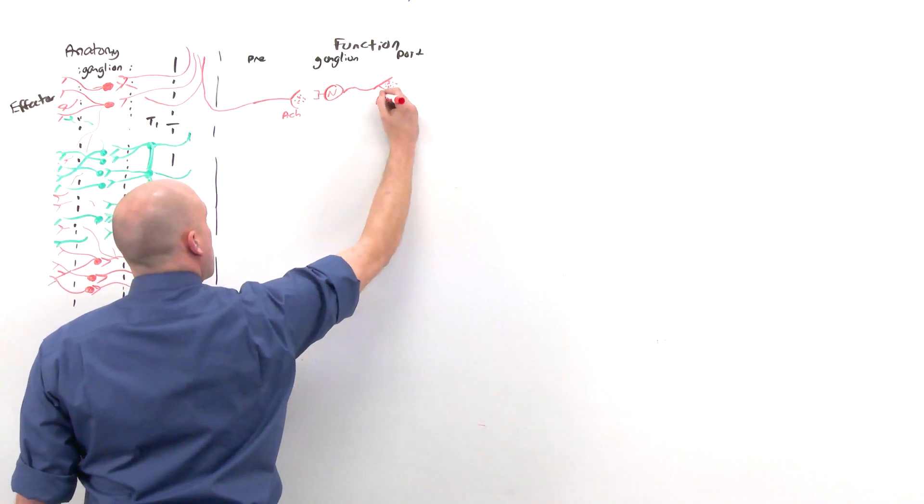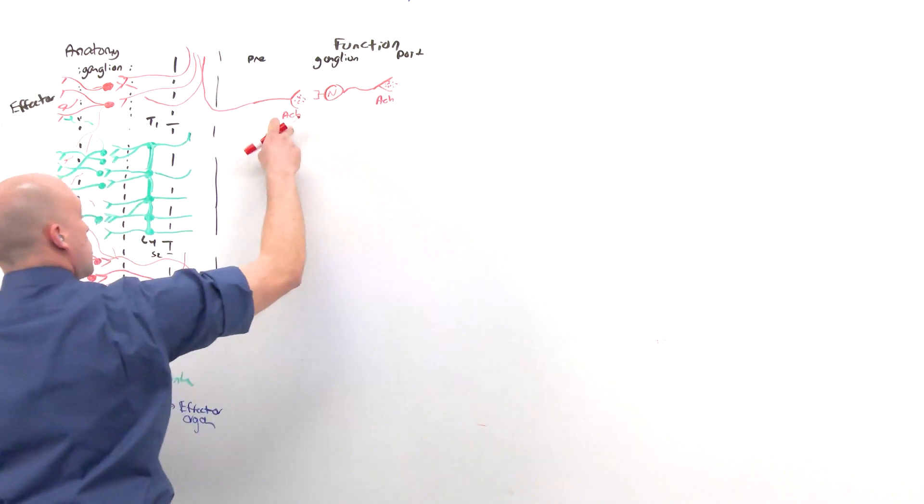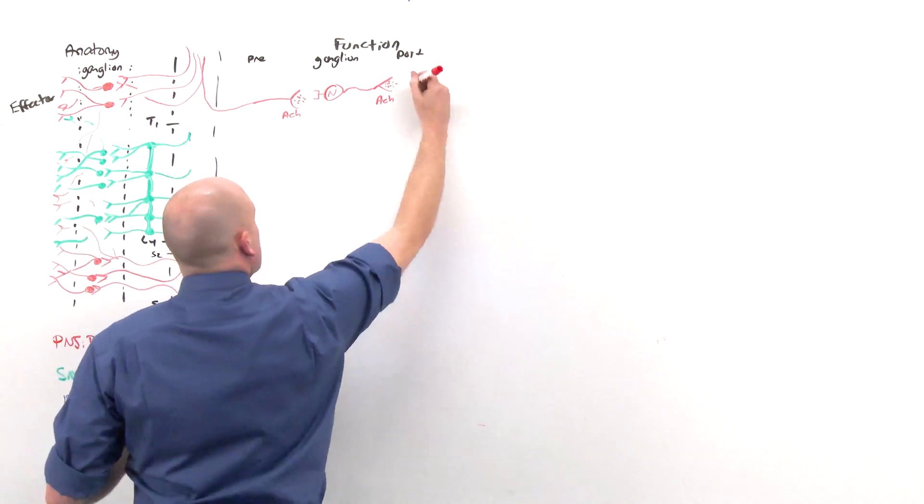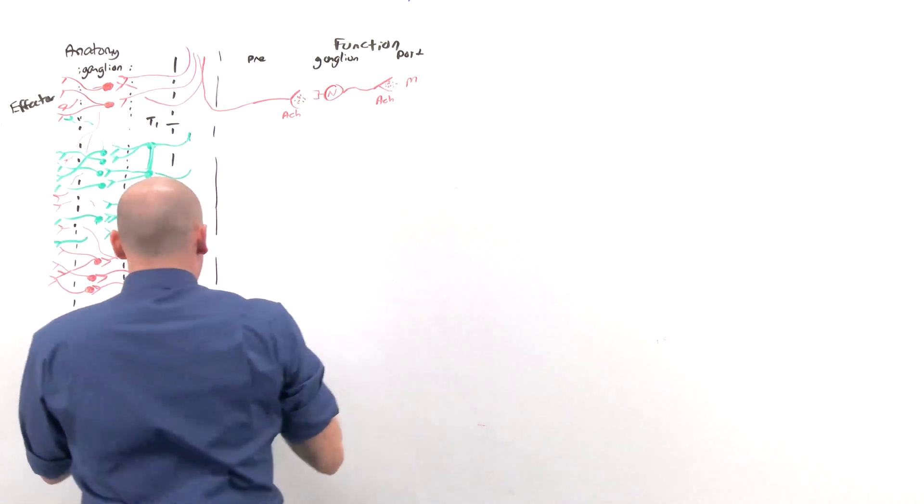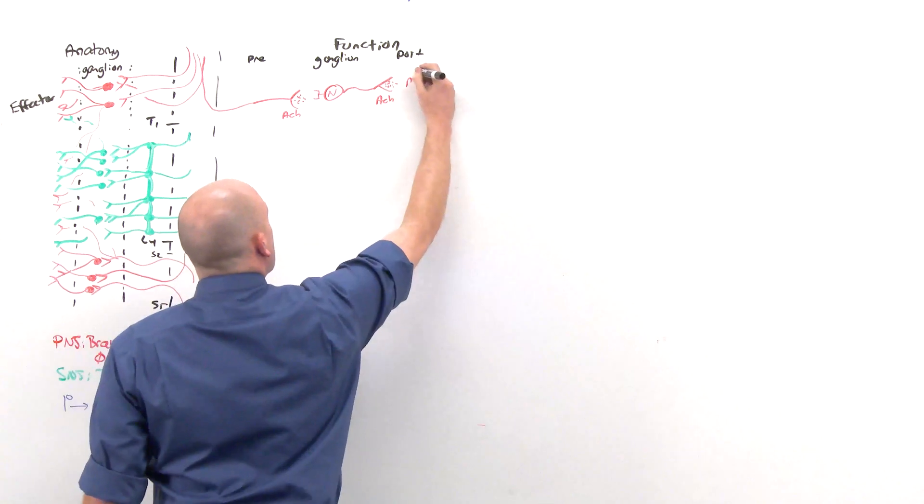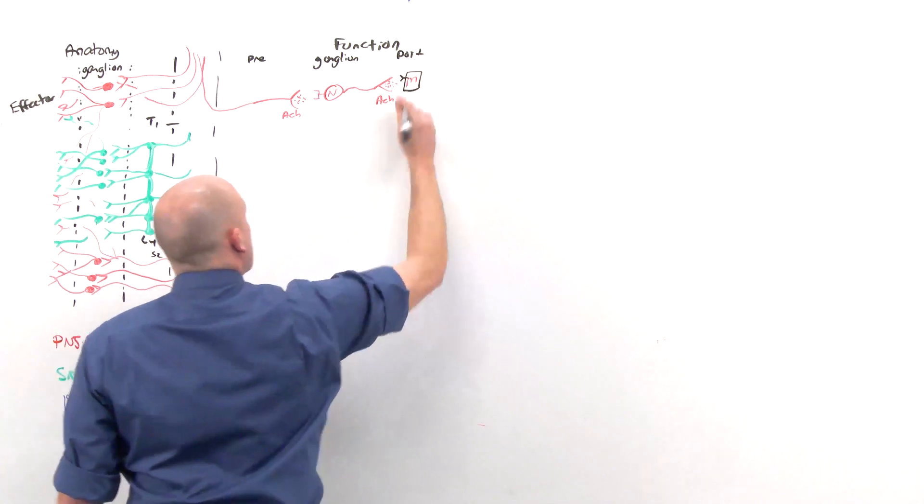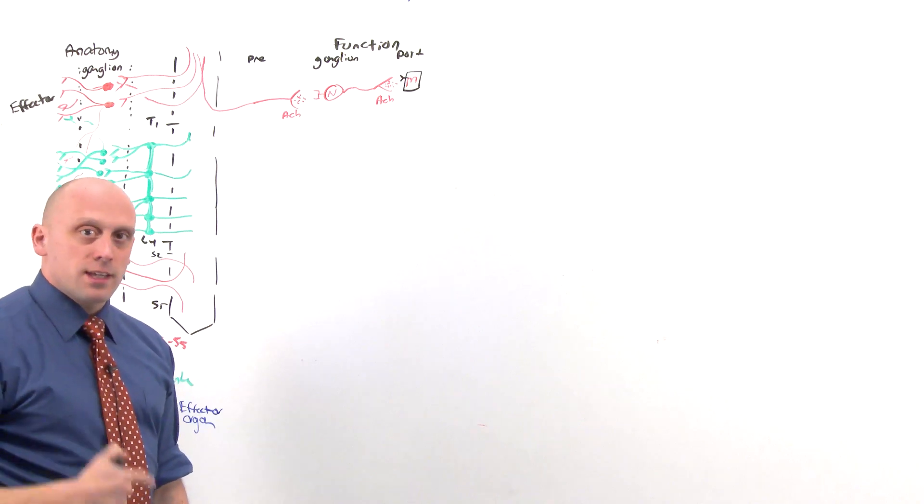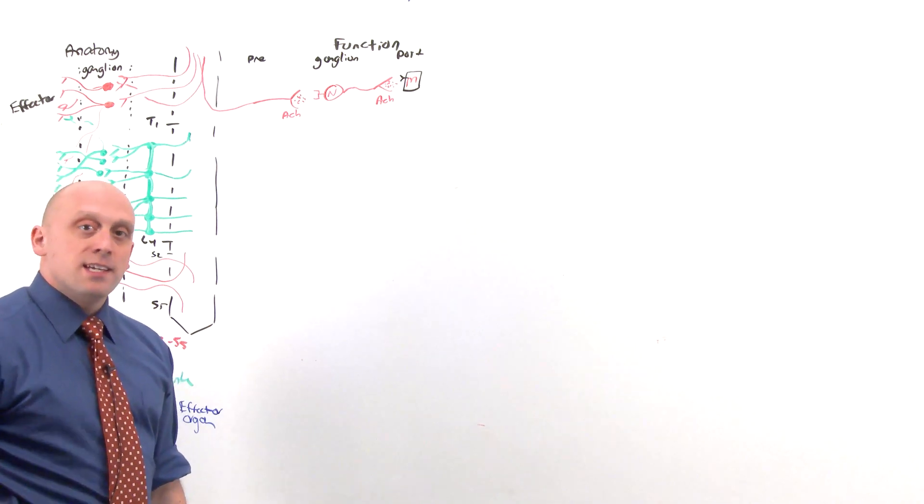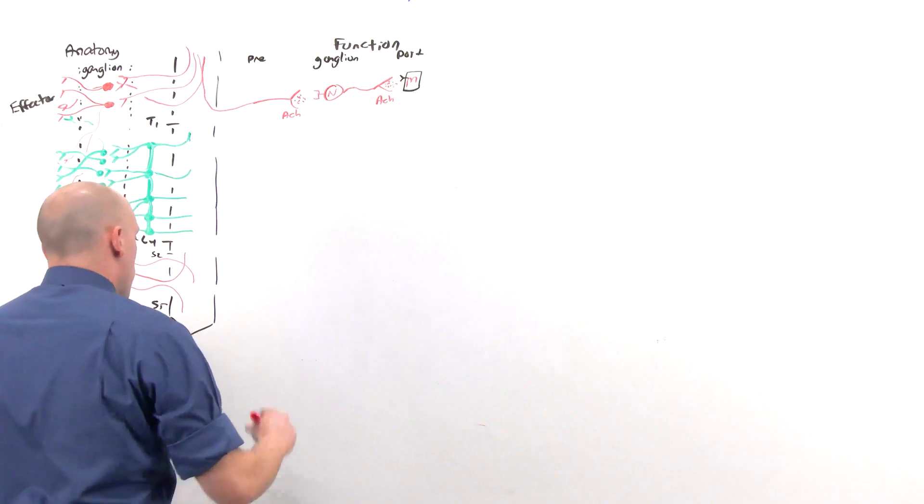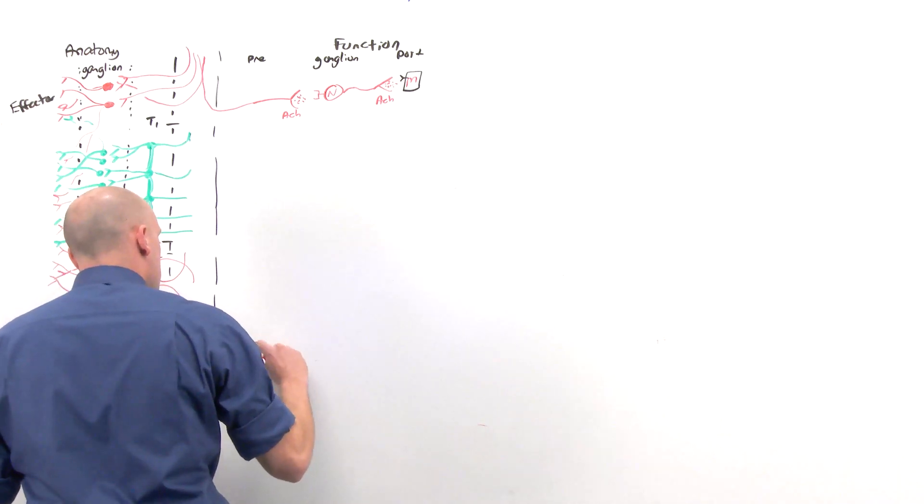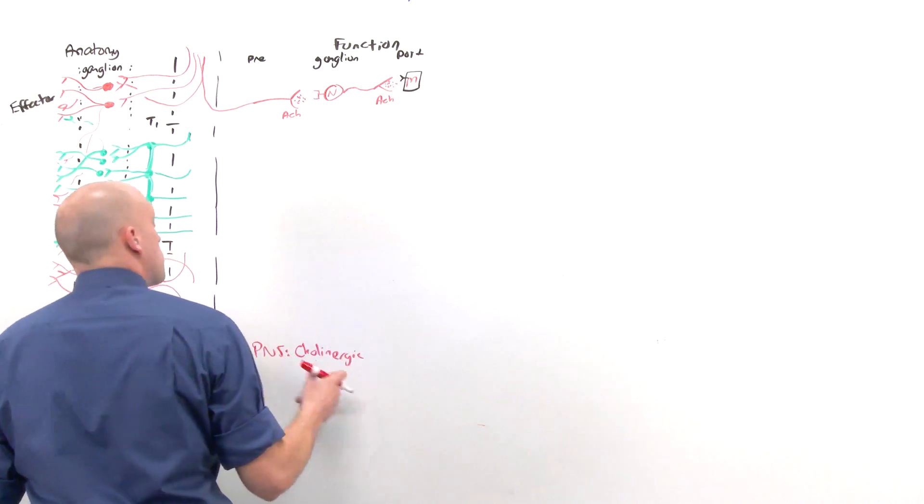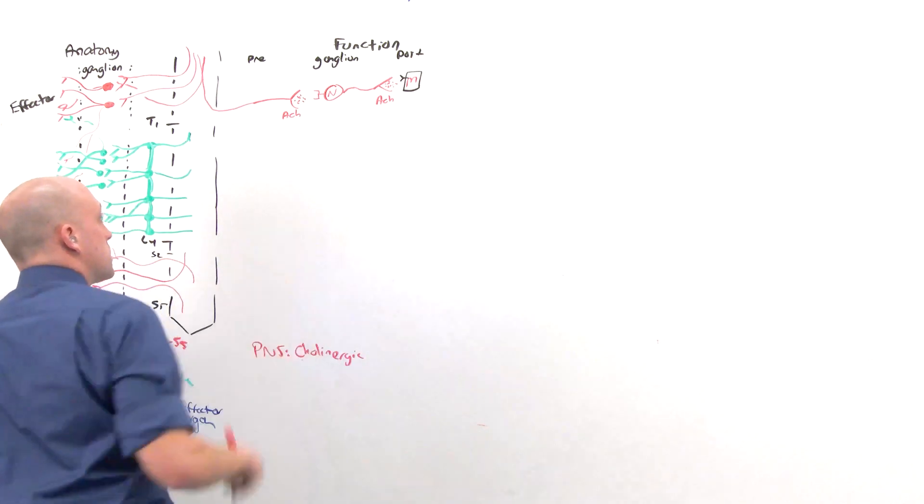The parasympathetic nervous system is all acetylcholine. Acetylcholine at the ganglion, acetylcholine at the effector cell, only the effector cell is going to be using muscarinic receptors for the most part to have its effect. Nicotinic receptors in the ganglion, muscarinic receptors in the periphery. Therefore the PNS is said to be cholinergic, cholinergic because it uses only acetylcholine.